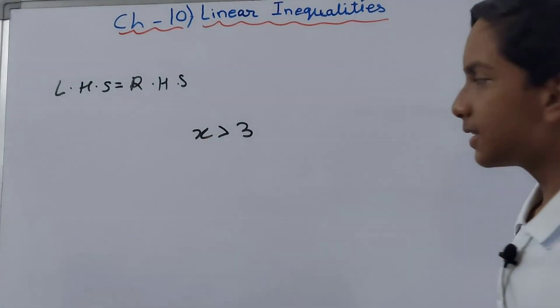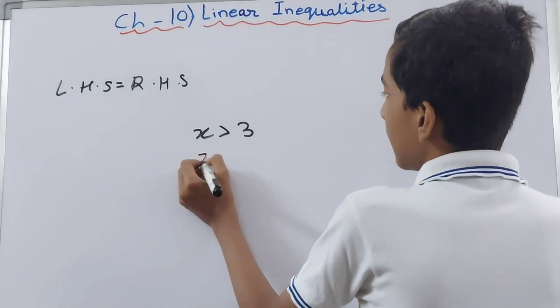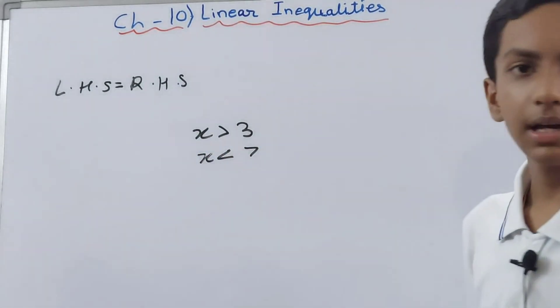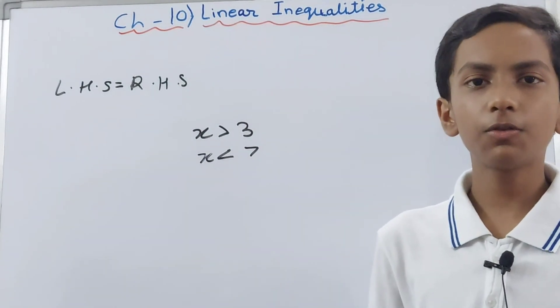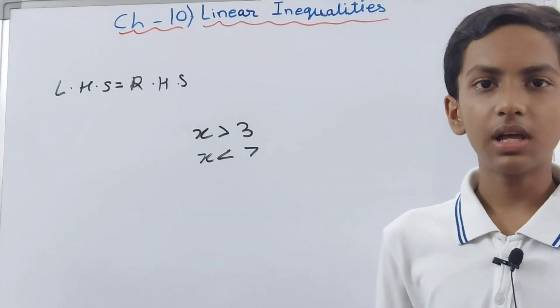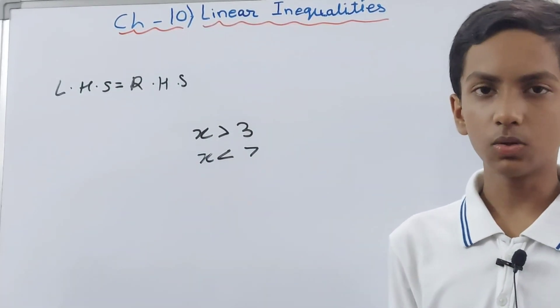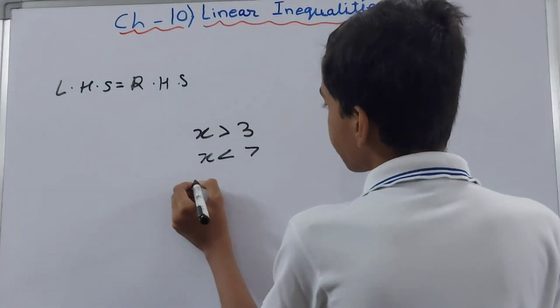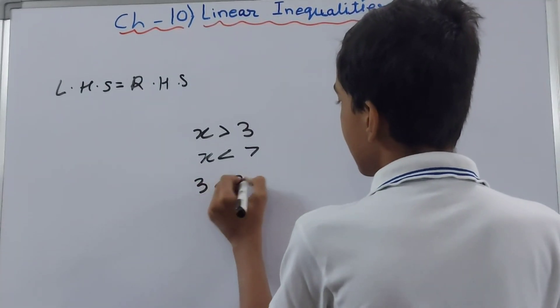Same way, if I say that x is less than 7, again it can be any value like 1, 2, 3, 4, 5, or it can also be a negative value like -1, -2, and so on. Now suppose I take one more inequality: 3 is less than x and x is less than 8.